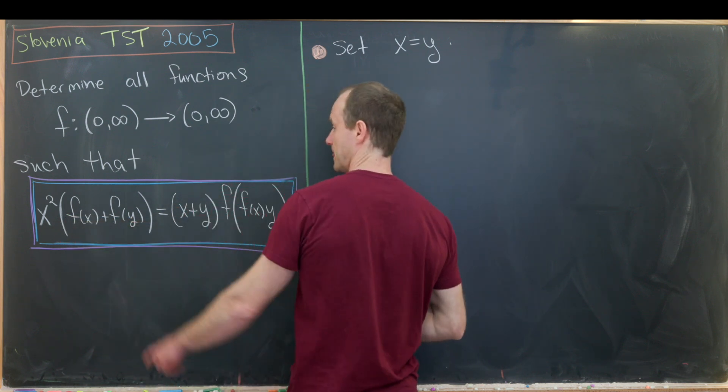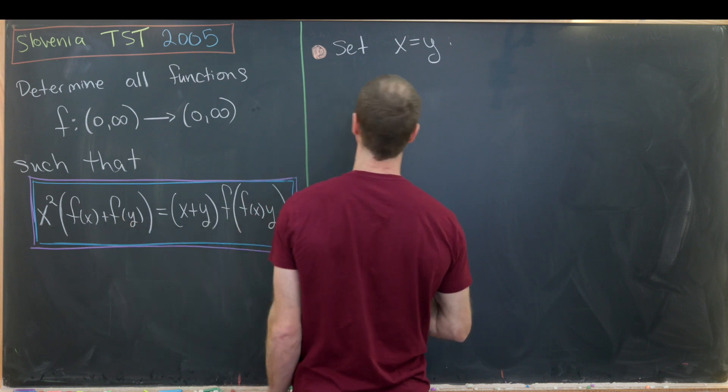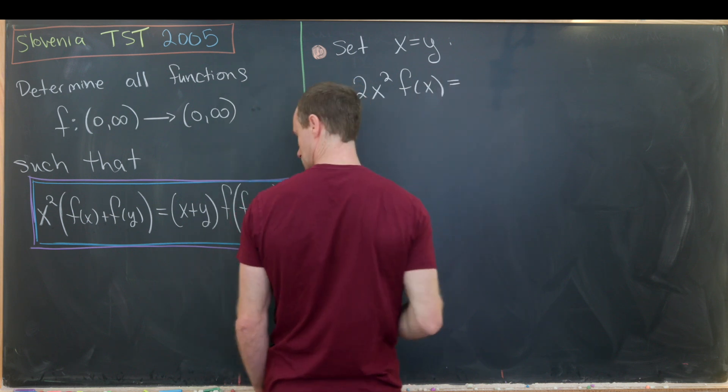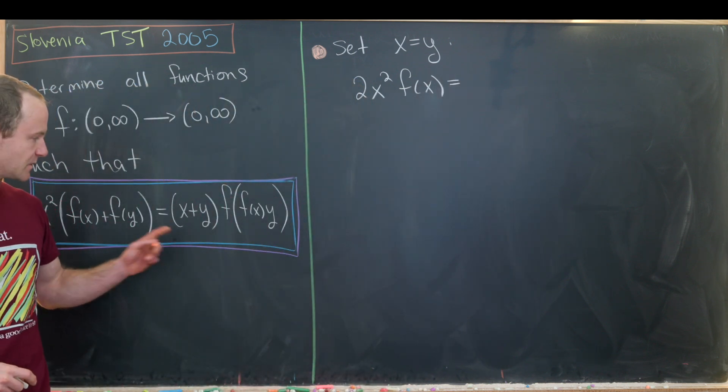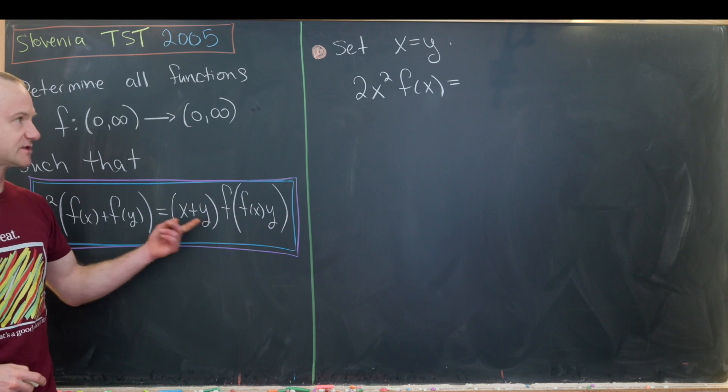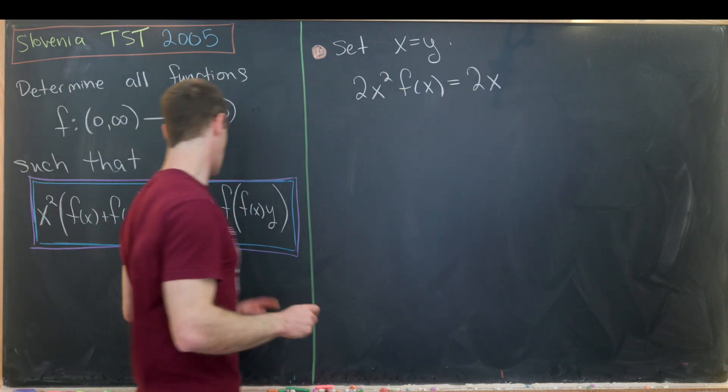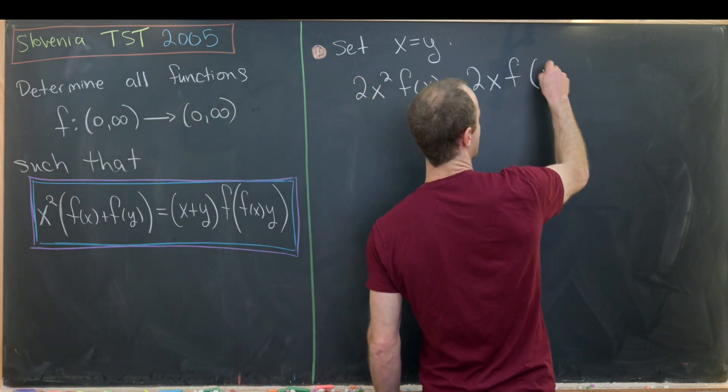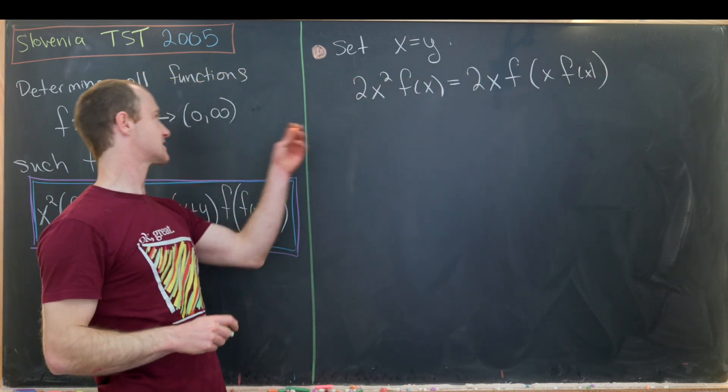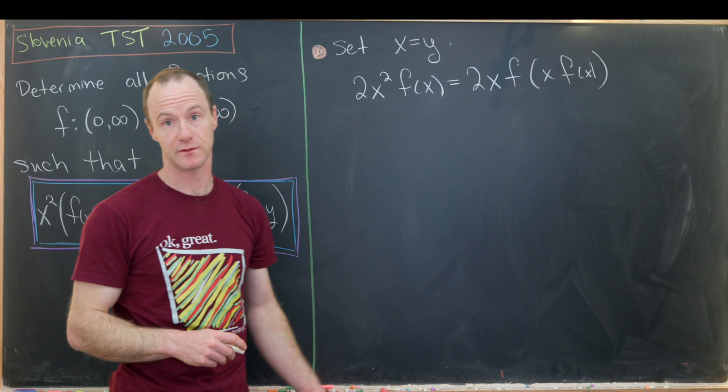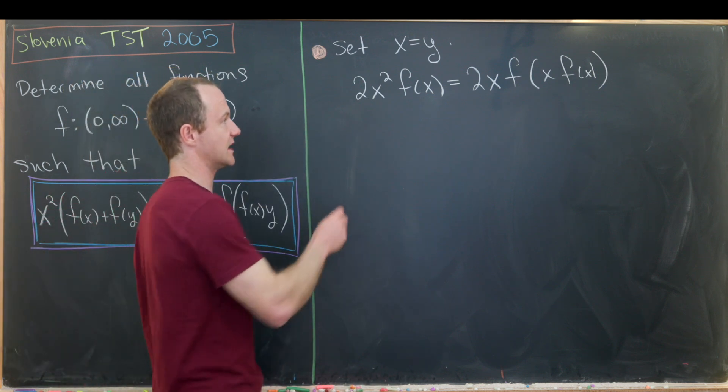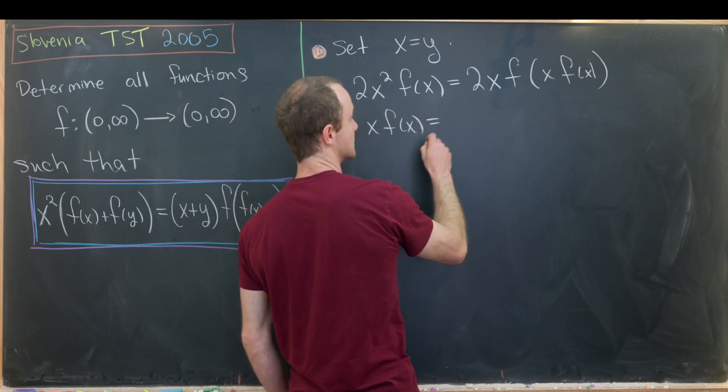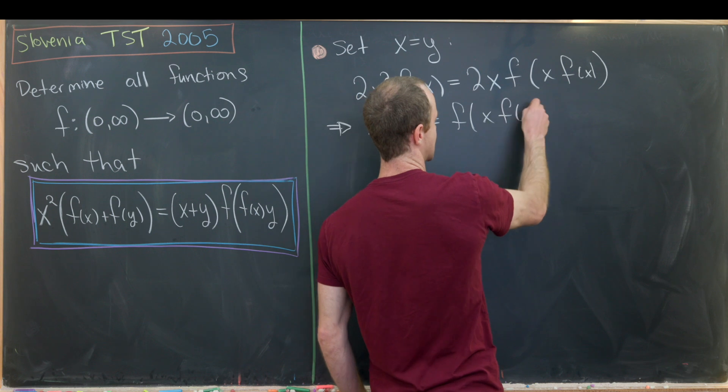Let's set x equal to y and see what our functional equation turns into. We'll have x²f(x) + x²f(x), so that'll be 2f(x). That means the left-hand side is 2x²f(x). Then let's look at the right-hand side. We'll have x + x, so that's 2x, and then we'll have f evaluated at x times f(x). Now since x comes from the positive real numbers, we can divide it from both sides because it's not zero. Two is also not equal to zero, so we can divide that from both sides. That leaves us with xf(x) = f(xf(x)).